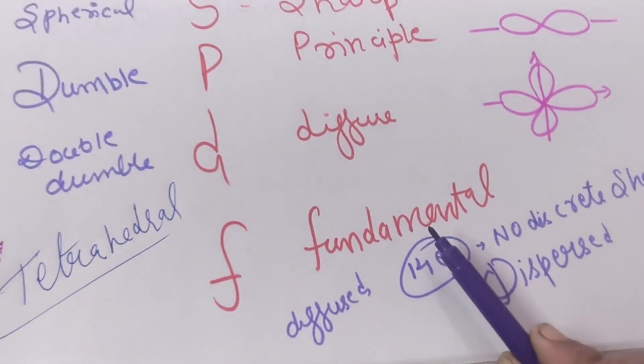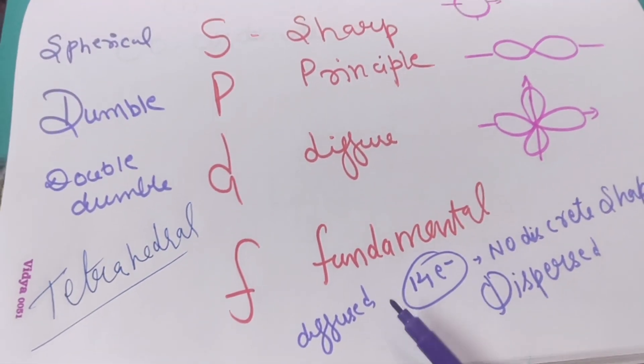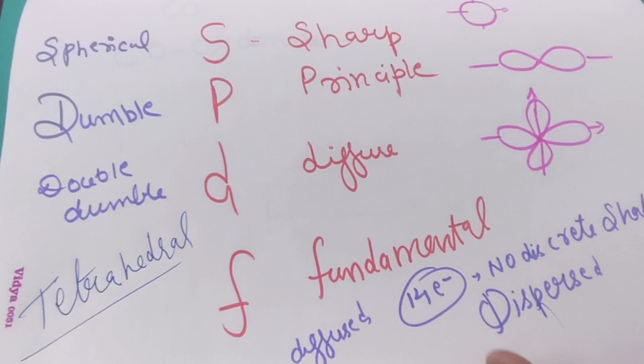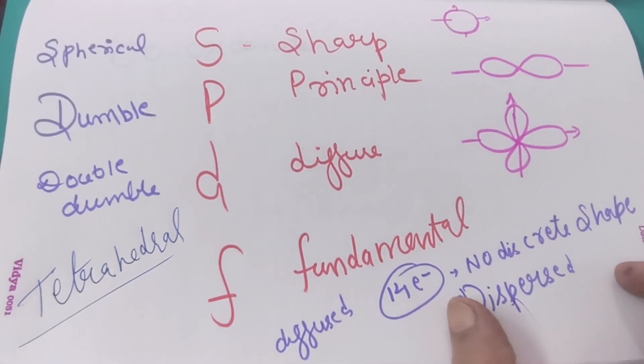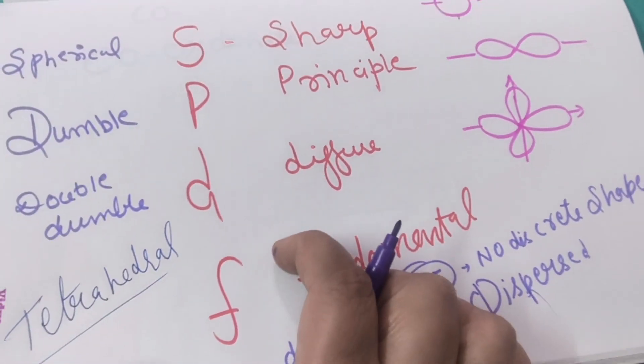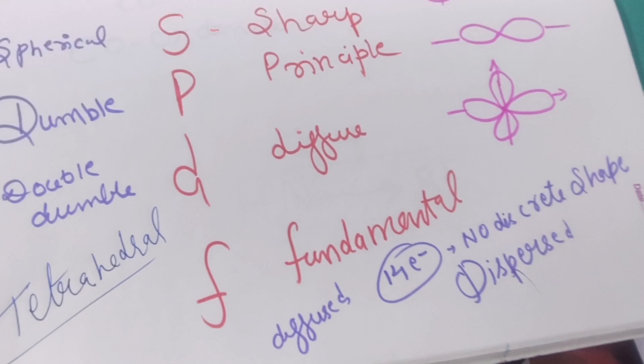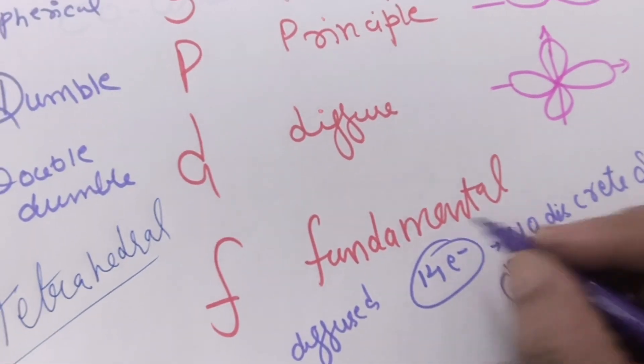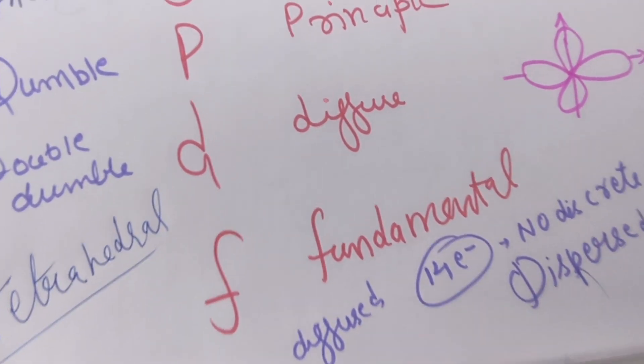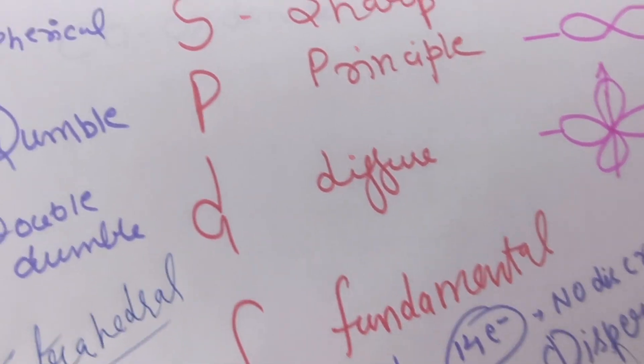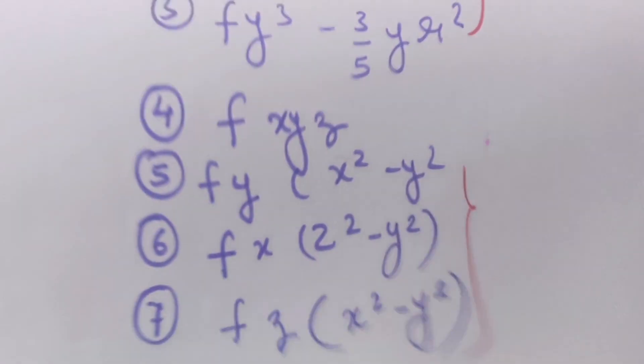The shape of f orbitals, if we talk about, the shape of f orbital is diffused or dispersed. There is no discrete shape allotted to the f orbitals. After the research has been done, the shapes has been assigned the tetrahedral because they have to accommodate 14 electrons, so they are very much diffused.